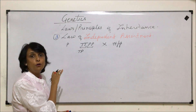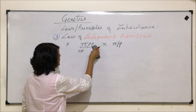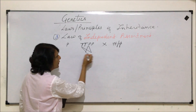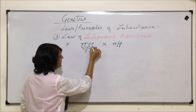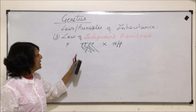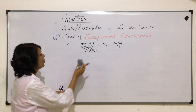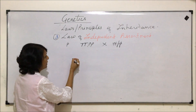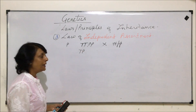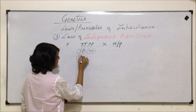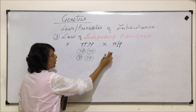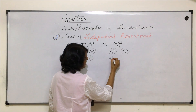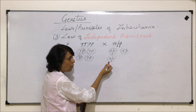There are four gametes produced by this parent. Capital T can go with capital P, or capital T can go with another P — so there are four possible ways in which the T and P alleles can go together. For the recessive parent, all four gametes are going to carry the recessive alleles — recessive for tallness (lowercase t) and recessive for color (lowercase p, i.e., white).